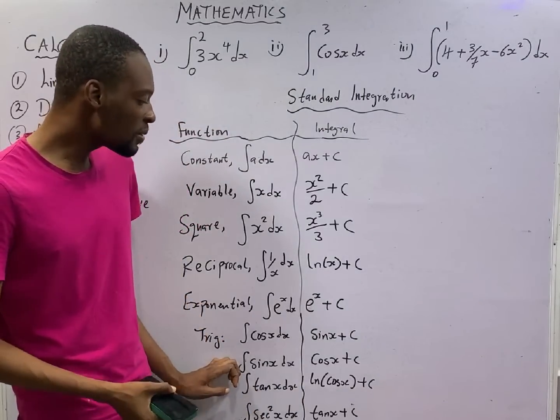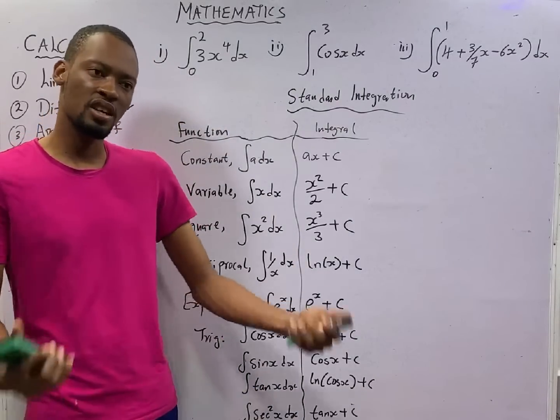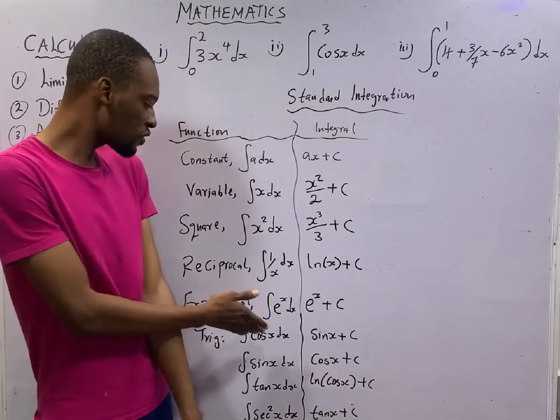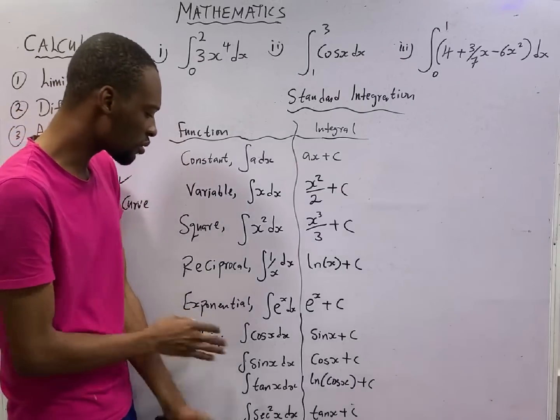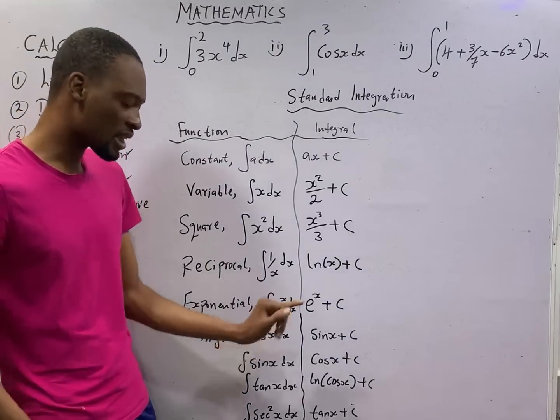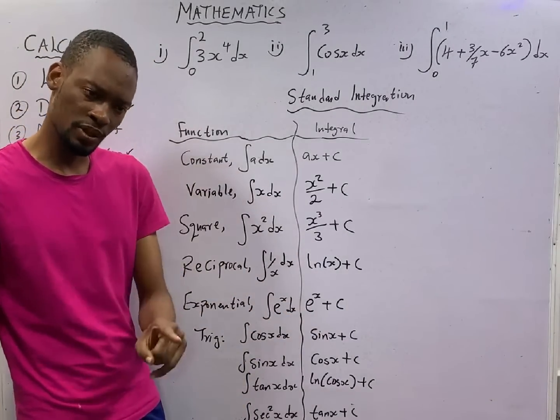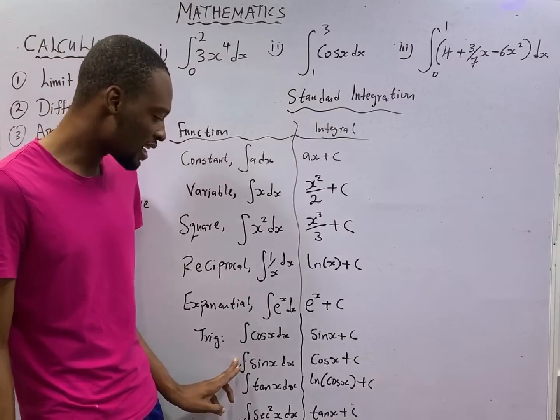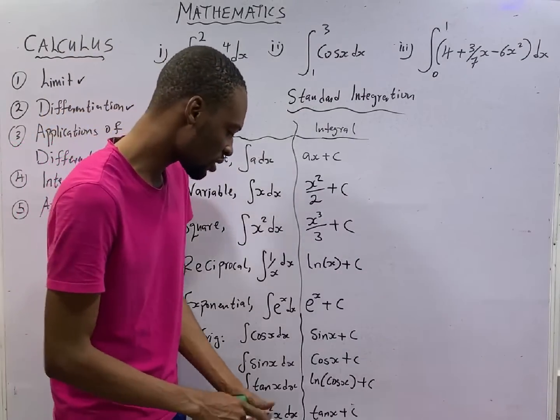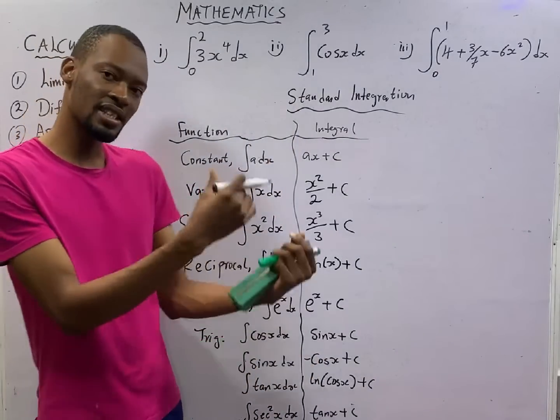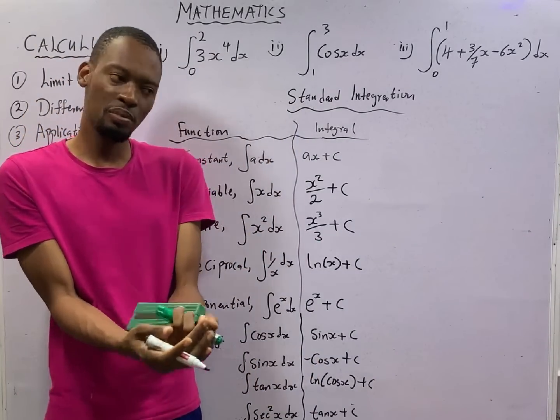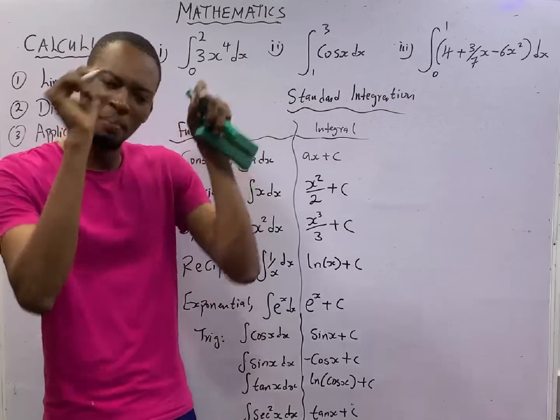For trigonometry, this is where the converse is obvious. If you differentiate sin s, you get cos s. But for integration, when you integrate cos s, you will get sin s plus c. When you integrate sin s, you get minus cos s. You see the difference? When you differentiate sin s, you get cos s. But when you integrate sin s, you will get minus cos s.